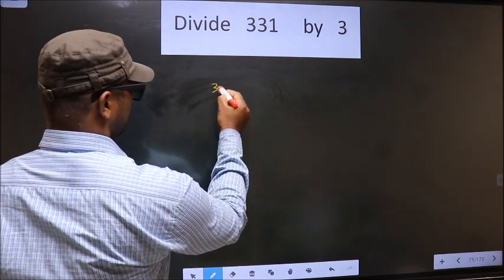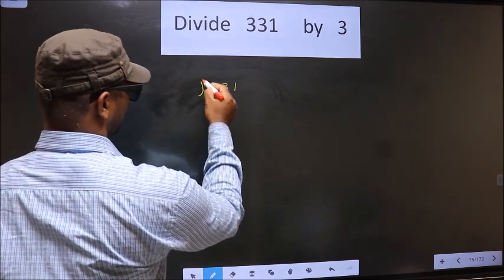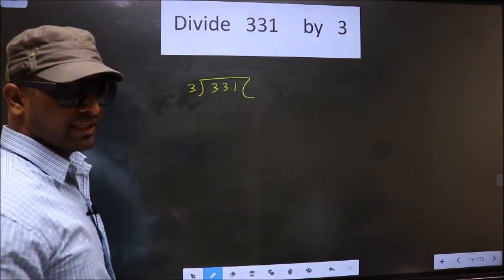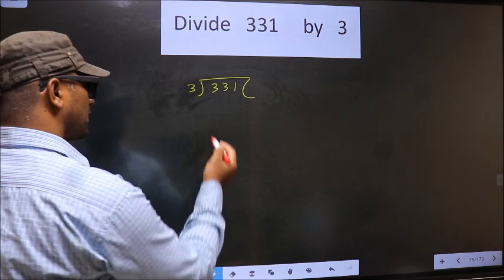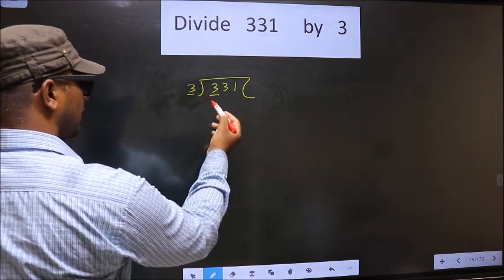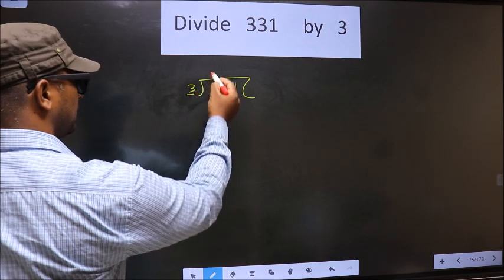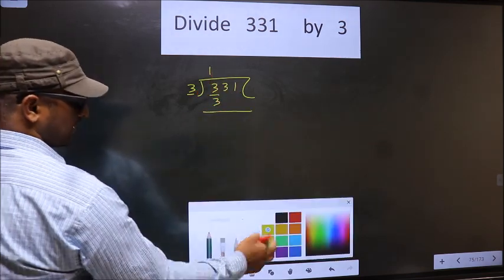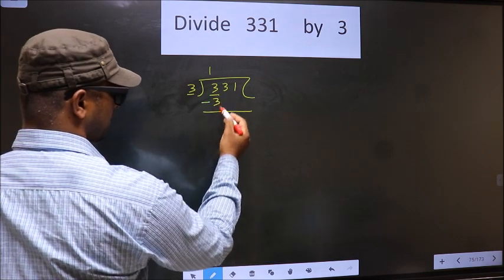That is 331 and 3 here. Now here we have 3, here also 3. When do we get 3 in the 3 table? 3 times 1 is 3. Now you subtract. 3 minus 3 is 0.